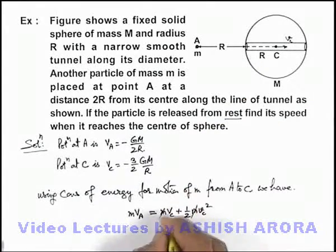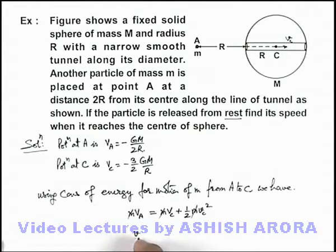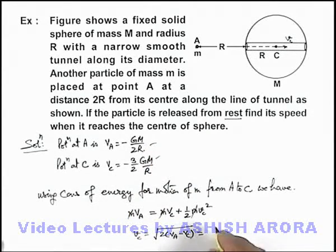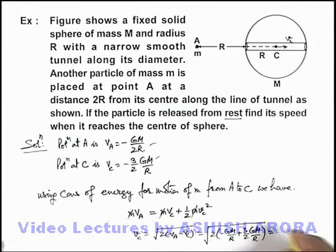Here m gets cancelled out and directly we can write the speed of particle at center is root of twice V_A minus V_C. If we substitute the value of V_A and V_C from here, we can see we're getting it as root of twice of minus GM by R plus 3 by 2 GM by R. On solving the expression finally, we'll be getting the result to be root of: 3 by 2 GM by R minus GM by R will be GM by 2R.